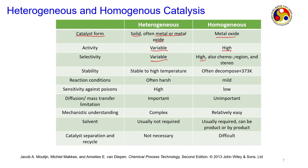Stability: heterogeneous is stable to high temperature; homogeneous is only at low temperature because most catalysts decompose in the solvent media as temperature rises. Reaction conditions: heterogeneous can take very harsh conditions; homogeneous only mild conditions. Sensitivity against poisons: very high in heterogeneous because poison can clog catalyst surface and cause pore clogging; poison capacity is higher in heterogeneous compared to homogeneous.